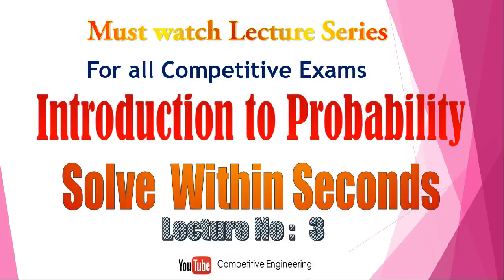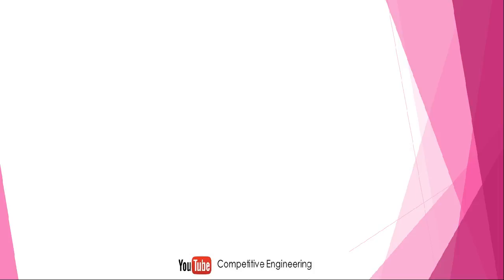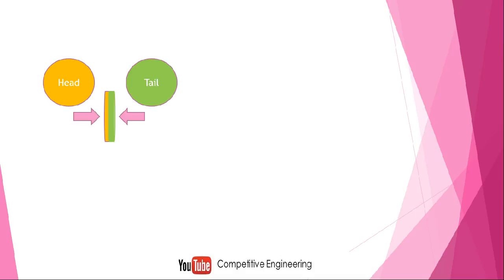Welcome to Introduction to Probability, video lecture number three. In this video we are going to explain the concept of coins, because understanding coins is a basic requirement to understand probability. Some questions may come from this concept. A coin has two sides: one is tail and one is head. I will show the head side with orange color and the tail side with green color for easy understanding.